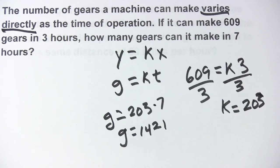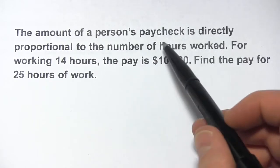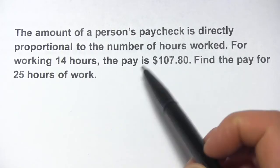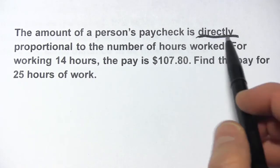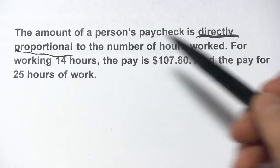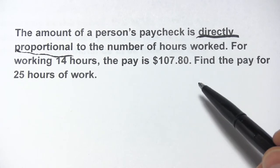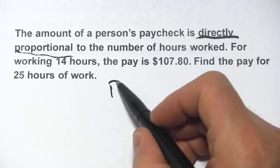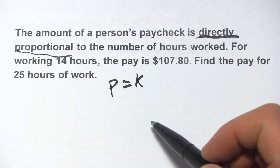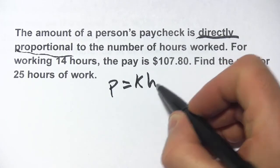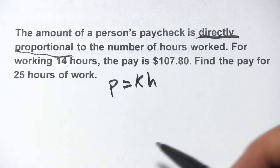Let's try another problem like this. This one says the amount of a person's paycheck is directly proportional to the number of hours worked. That's another type of language — just as 'varies directly,' 'directly proportional' means the same thing here. So the amount of a person's paycheck — let's call it p — is directly proportional, so there's our constant of variation, to the number of hours worked. So: p equals k times hours.